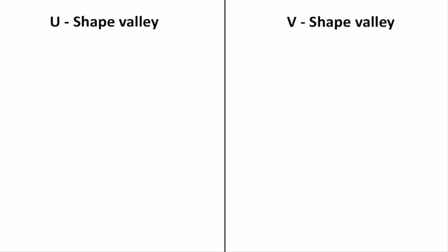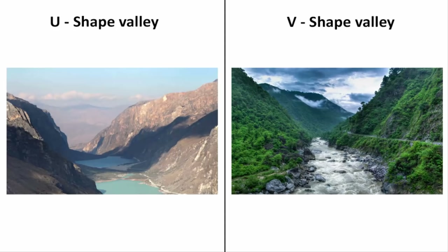Valleys are usually in the form of U and V shape. When rivers and streams carve hills and mountains for thousands of years, they form a valley and they denote the shape of letter V.